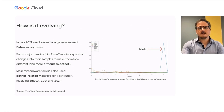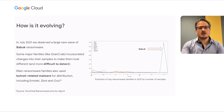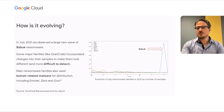Attackers also use other malware families to get into their victims before deploying ransomware. This includes remote access Trojans and botnets. Unfortunately, in some occasions, we underestimate the presence of such malware without considering that this might be the first stage of a critical attack.